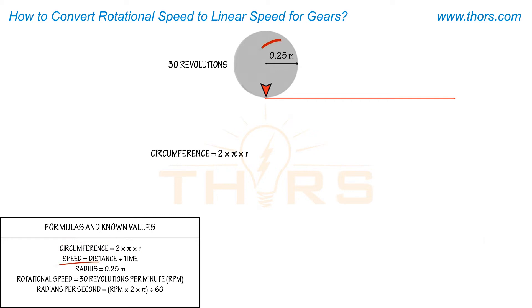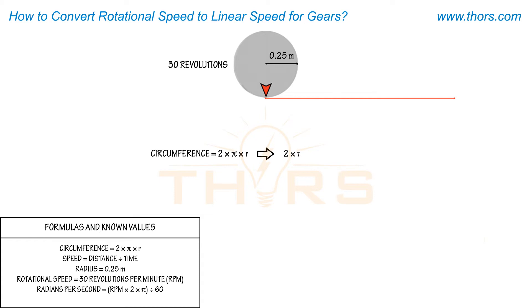Where r is the radius of the drum. In this example, the radius of the drum is 0.25 meters. The circumference of the drum is calculated as 1.5708 meters. Therefore, the linear distance traveled for one revolution of the drum is 1.5708 meters.